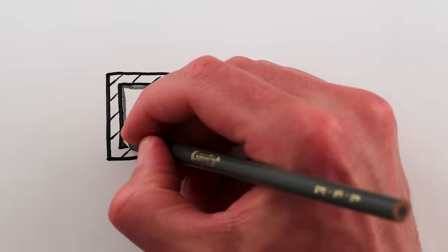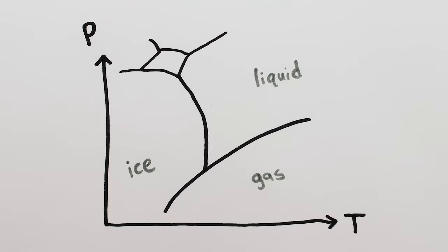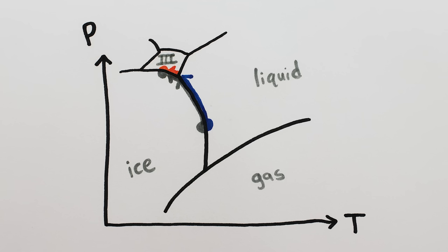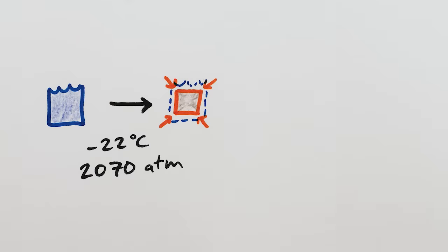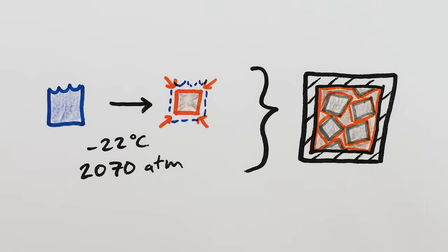As for whether the container ever completely turns to ice? Well, looking at the phase diagram again, we see that once the temperature is low enough and the pressure high enough, the remaining liquid water can freeze into a different phase of ice, called ice 3. And ice 3 contracts and becomes denser when it freezes, creating more space and allowing the entire container to freeze solid.